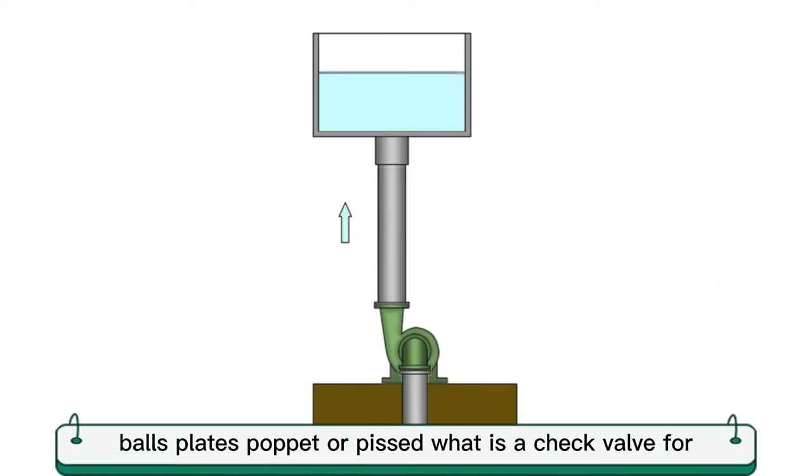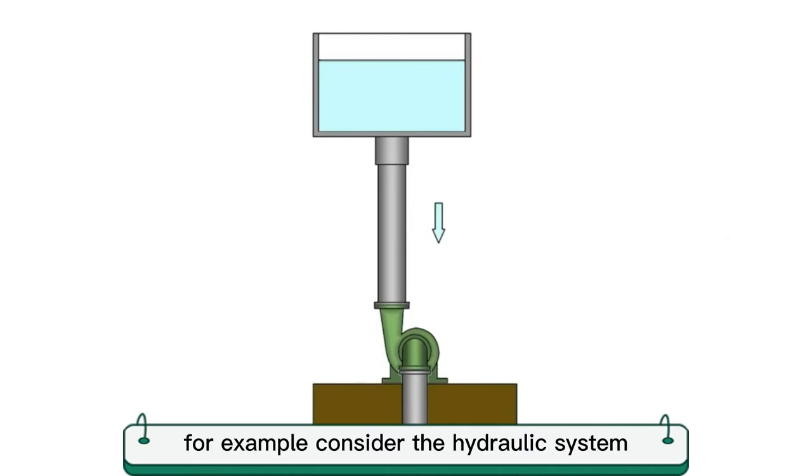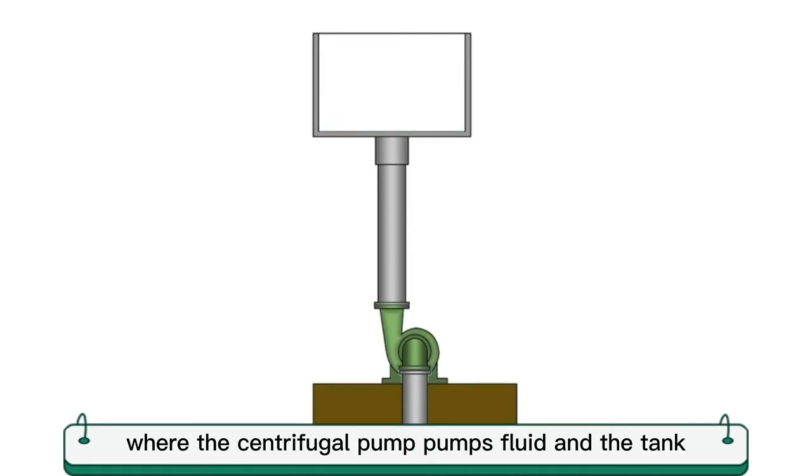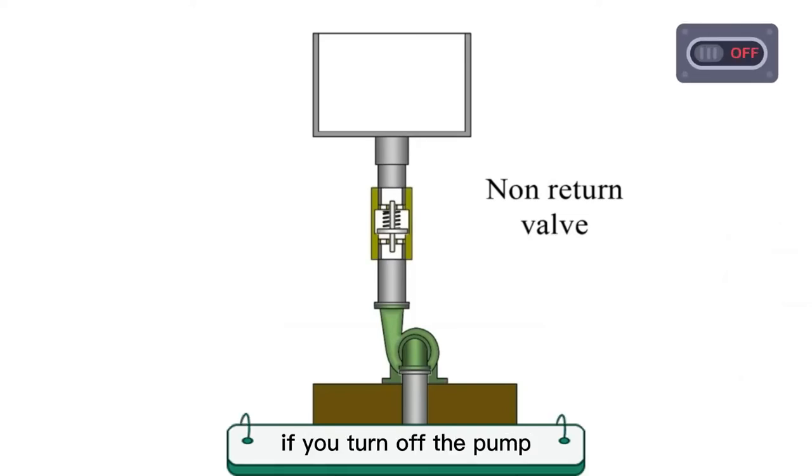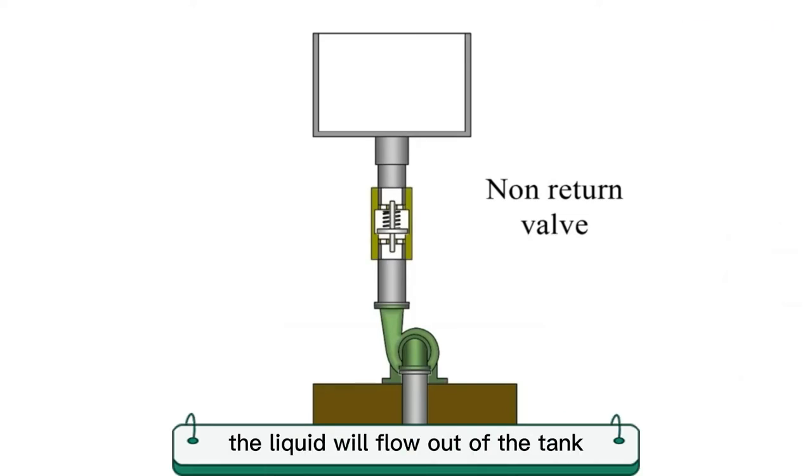Balls, plates, poppets, or pistons are used in check valves. For example, consider a hydraulic system where a centrifugal pump pumps fluid into the tank. If you turn off the pump, the liquid will flow out of the tank.